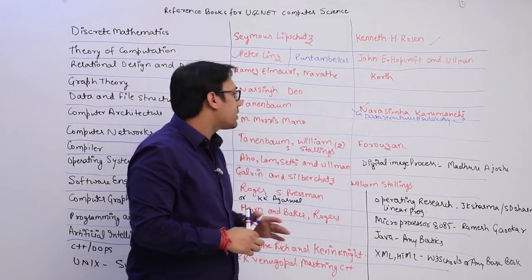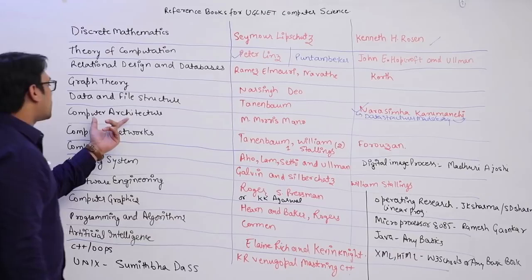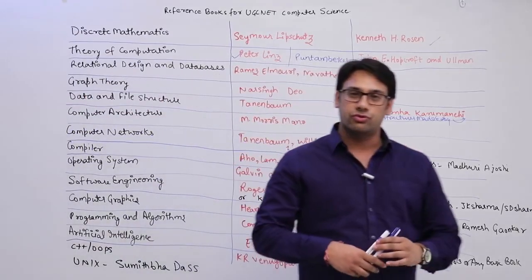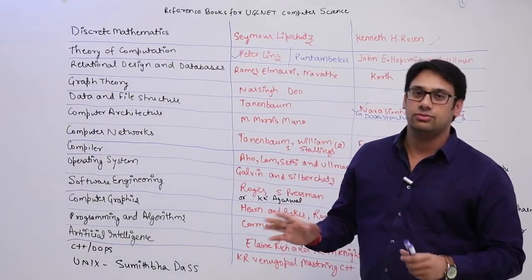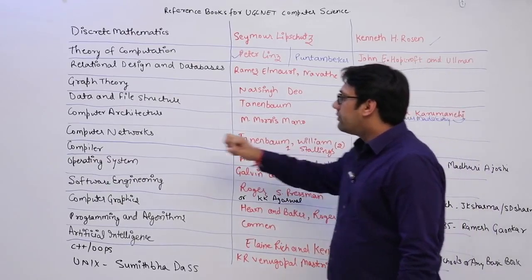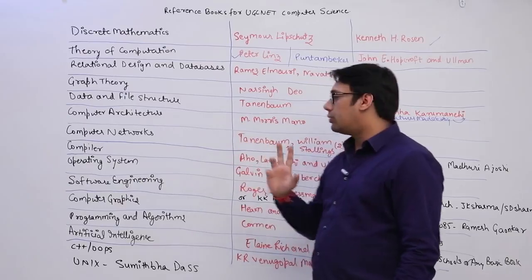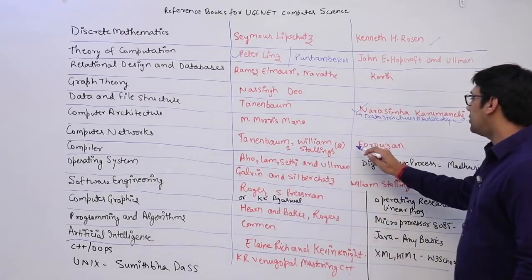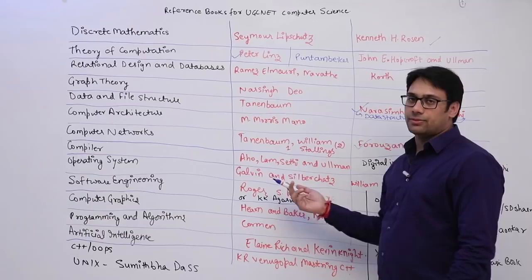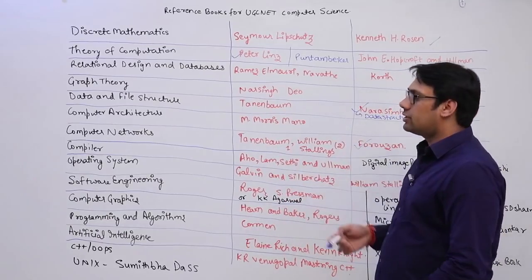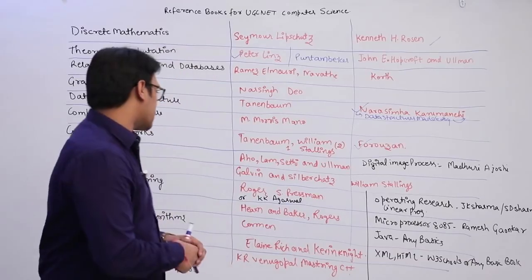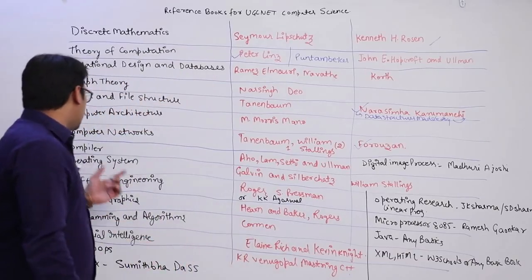For Computer Architecture, Maurice Mano is the only book you need to refer — don't go for any other book. For Computer Networks, the only book I suggest is Forouzan. You can also refer Tenenbaum or William Stallings, but personally I only refer Forouzan and I don't feel you need any other book for Computer Networks.